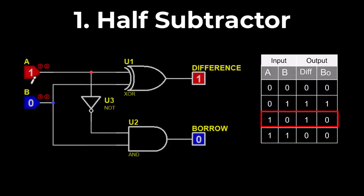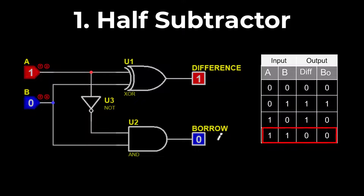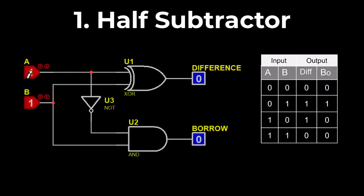Apply 1 and 0 — the difference will be 1 and the borrow will be 0. Apply 1 and 1 — the difference will be 0 and the borrow will be 0. Half subtractors can perform subtraction operations on single-bit binary data. For two or more bits, we have to use a full subtractor.